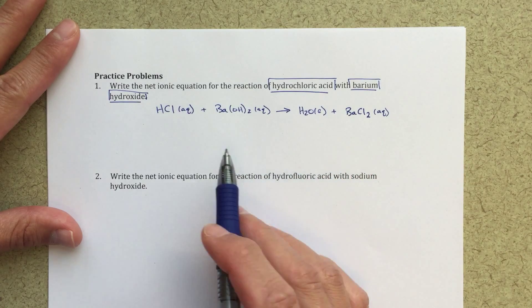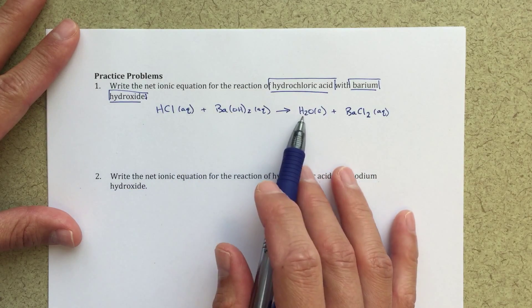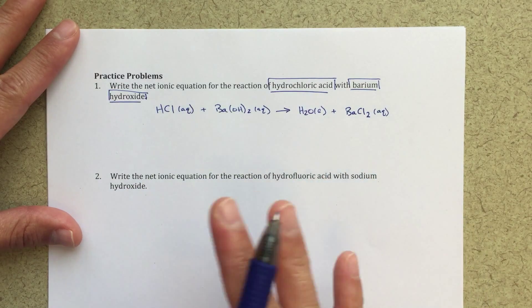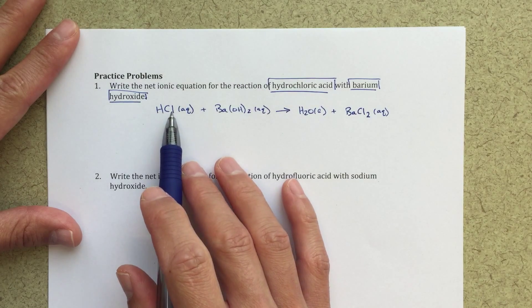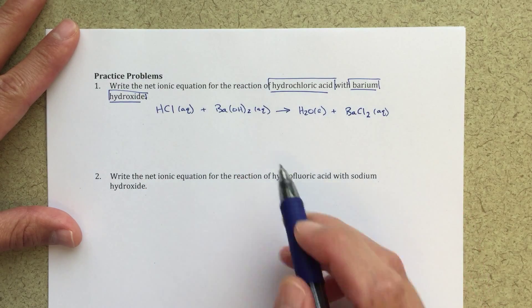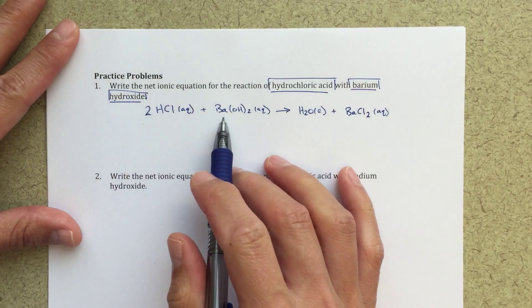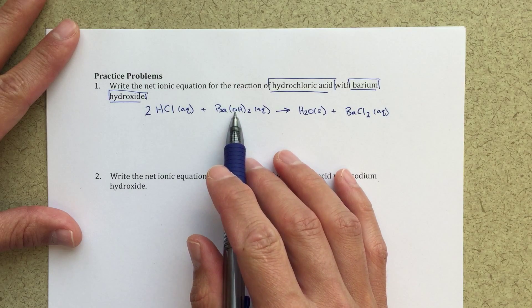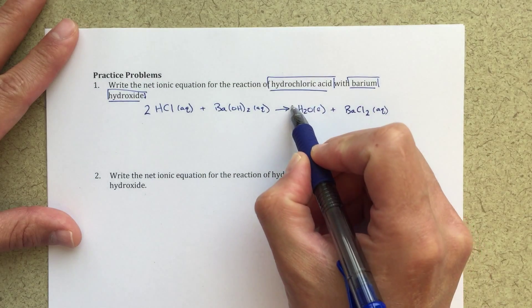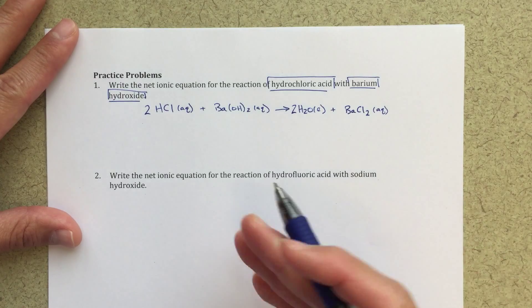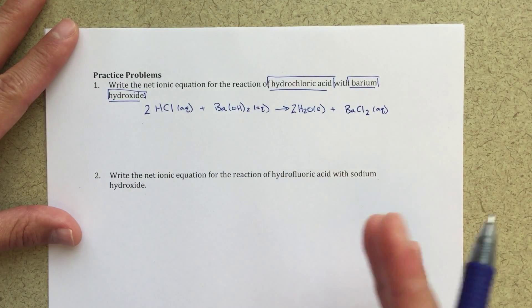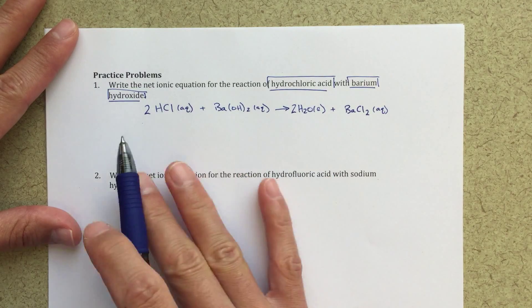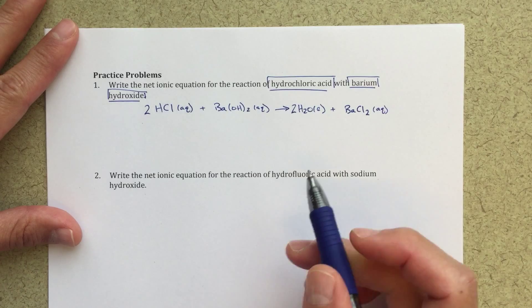Now step two, I'm gonna balance this chemical equation. I would look at the hydrogens first - I've got hydrogen here, here, and here - seems a little too complicated, so I'm gonna skip hydrogen first. I'm gonna go to chlorine: one chlorine here, two chlorines here, I'm gonna need to put a two here. One barium here, one barium here. I've got two oxygens here, only one oxygen here, so we'll put a two there. Now I've got two hydrogens plus two hydrogens is four, and I've got four hydrogens on this side. This is now a balanced chemical equation.